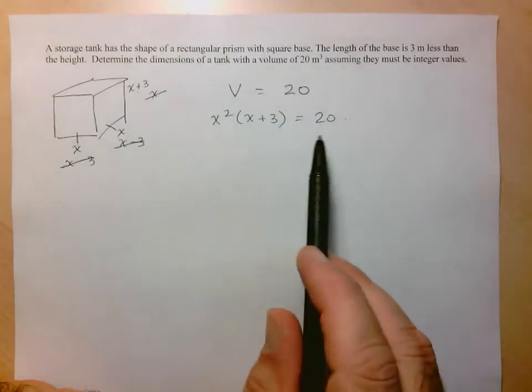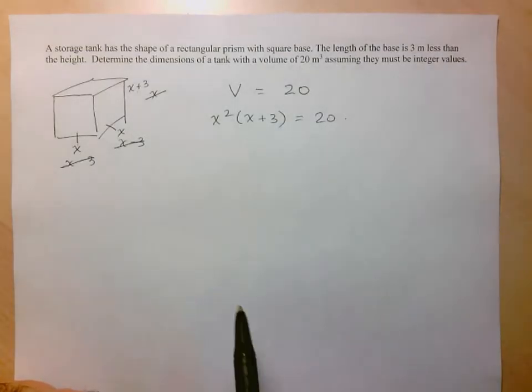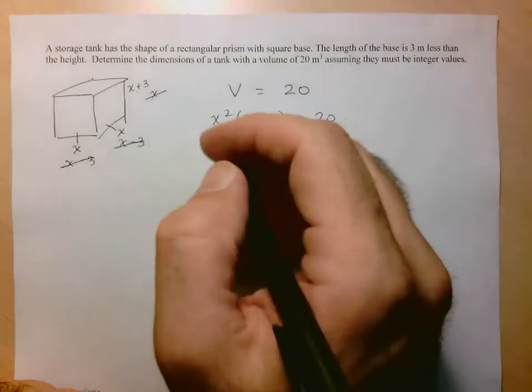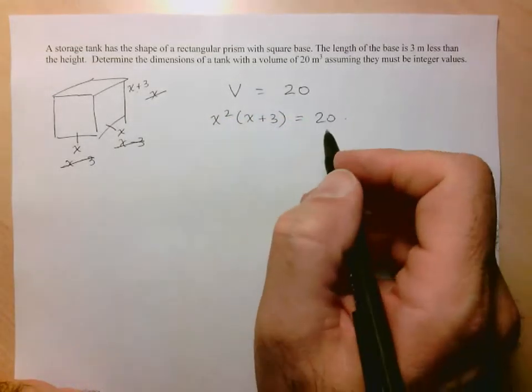So what we have here is a polynomial equation. And we've seen how we're going to deal with polynomial equations, very similar to the way we dealt with quadratic ones. We're going to distribute everything out, write it in standard form.